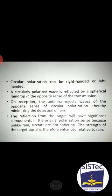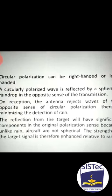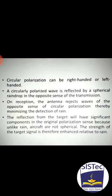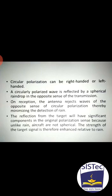A circular polarization can be right-handed or left-handed. A circularly polarized wave is reflected by a spherical raindrop in the opposite sense of transmission. On reception, the antenna rejects waves of the opposite sense of circular polarization, thereby minimizing the detection of rain. The reflection from the target will have significant components in the original polarization sense because, unlike rain, aircraft are not spherical. The strength of the target signal is therefore enhanced relative to rain.